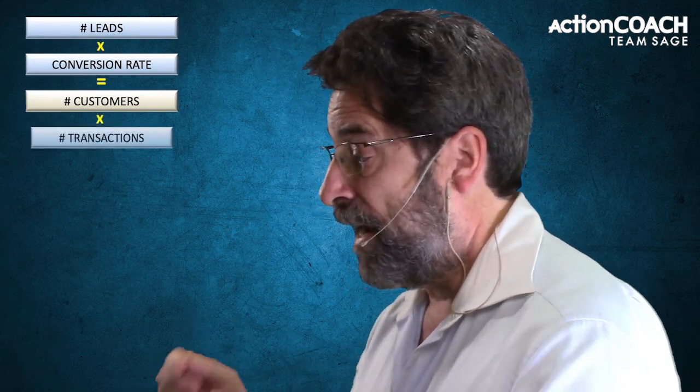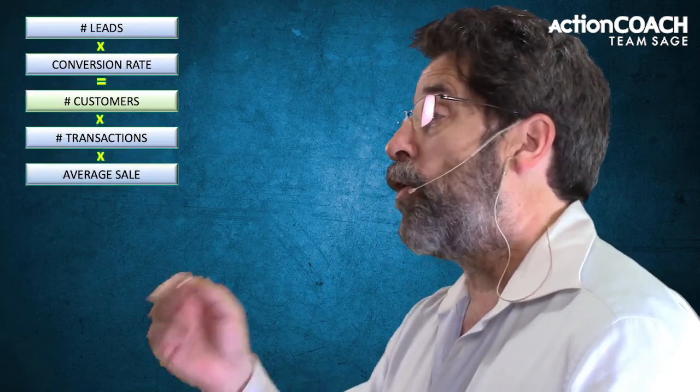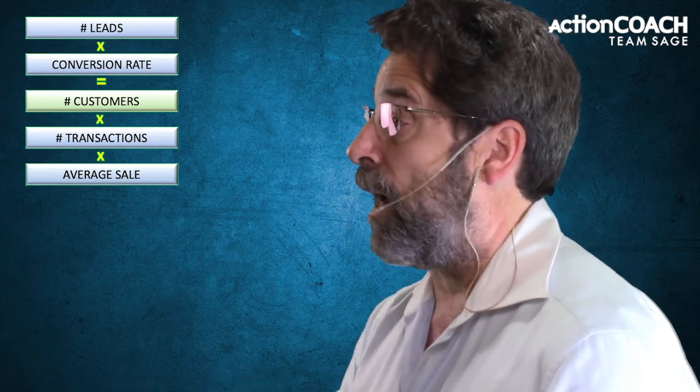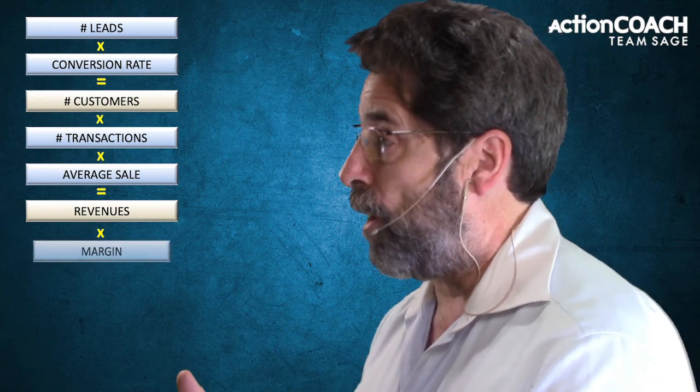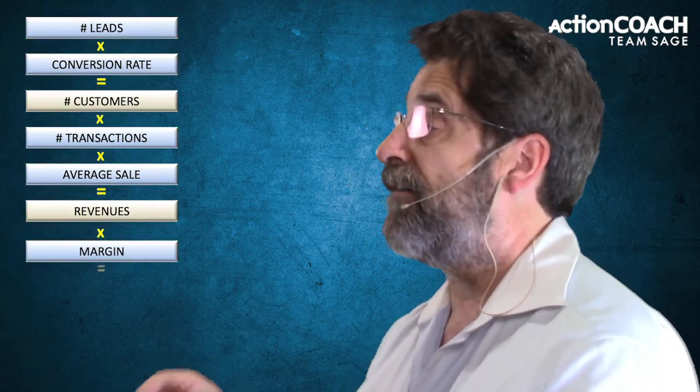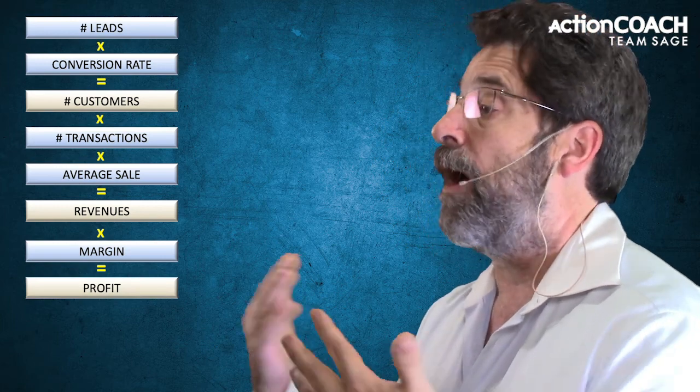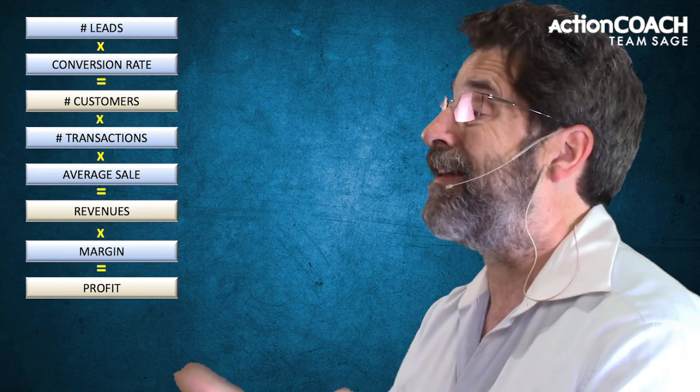Your number of customers times your number of transactions — that's how many times they actually purchased from you on average — times your average dollar sale — how much they spend with you on average — gives you your revenues. Those are the next two: number of transactions and average dollar sale. Then your revenues times your margin, which is the fifth one, gives you your profits. The margin is what percentage of what you bring in you get to keep as profit. So those five areas are the five ways that you can increase your profits.